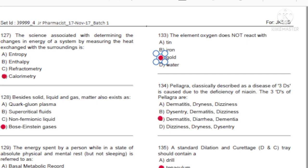Question 127: The science associated with determining the change in energy of a system by measuring the heat exchange with the surroundings is: A) Entropy. B) Enthalpy. C) Refractometry. D) Calorimetry. Answer: D, calorimetry.